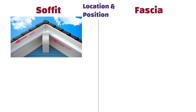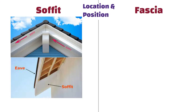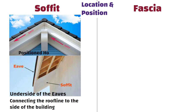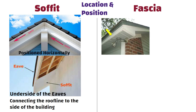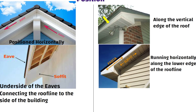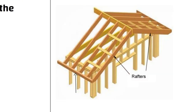Location and Position: The soffit is located on the underside of the eaves, connecting the roof line to the side of the building. It is positioned horizontally. On the other hand, fascia is situated along the vertical edge of the roof, running horizontally along the lower edge of the roof line. It is typically positioned at the end of the rafters.